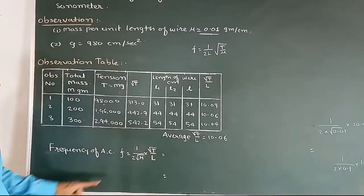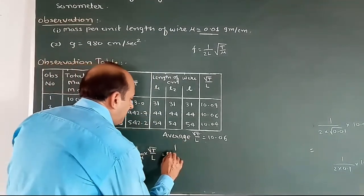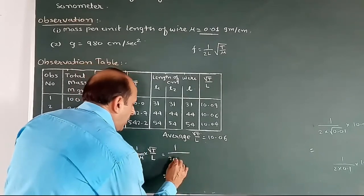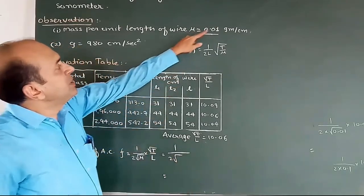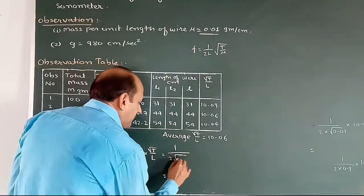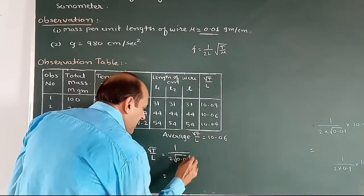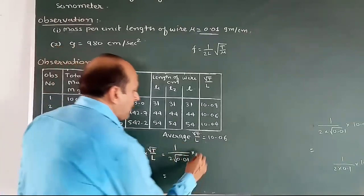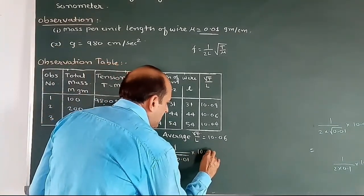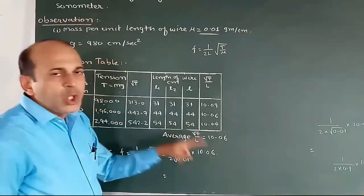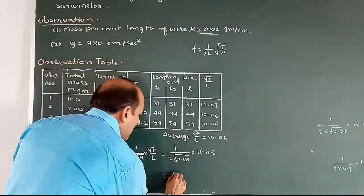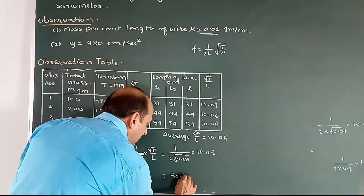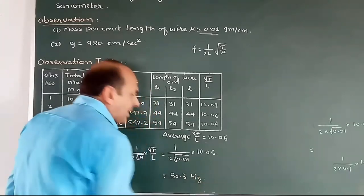Substitute this value in this calculation. So, 1 over 2 times the square root of mu. Mu is equal to 0.01 centimeters, and multiply by root T by average, which is equal to 10.06. For solving this, you will get the answer is 50.3 Hertz per second.